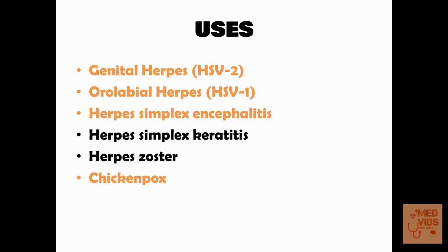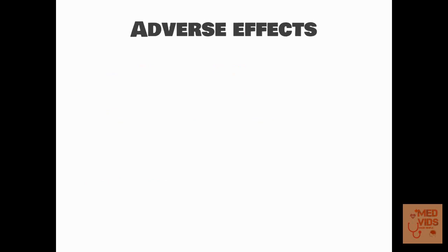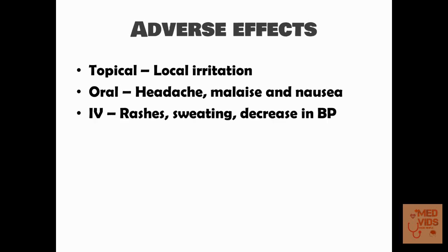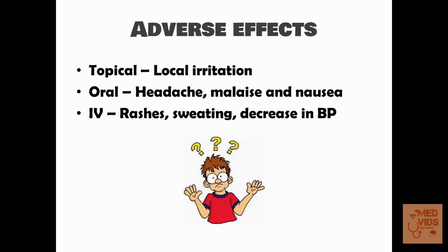Acyclovir can be used in herpes simplex encephalitis because it can enter the cerebrospinal fluid and cross the blood-brain barrier. It can be used in herpes simplex keratitis where it acts a bit slowly compared to idoxuridine. It can be used in herpes zoster, though it is not the drug of choice. It can also be used in chickenpox, reducing symptoms like rashes. Adverse effects are quite few — topically it can cause local irritation, orally headache, malaise, and nausea. Intravenous use can rarely cause rashes, sweating, decreased BP, and neurological manifestations like tremors, dizziness, hallucinations.